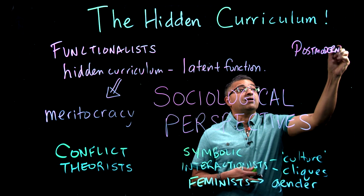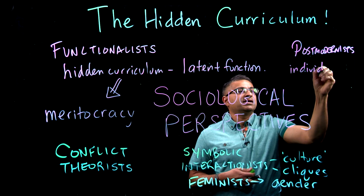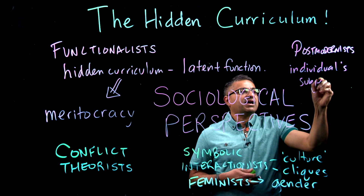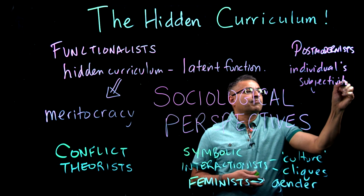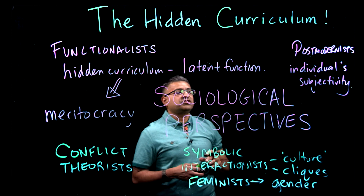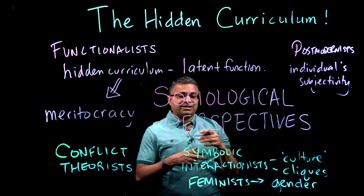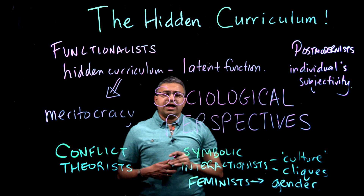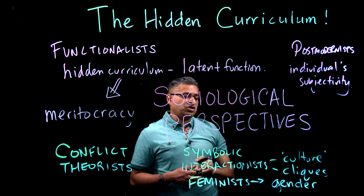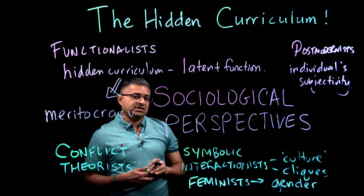And lastly would be the postmodernists. For them, the individual's subjectivity is paramount. They would say the individual can create or craft her, his, or their own experience of education, and they may perform some of these norms, values, and procedures, but they're kind of creating their own pathway in the school.